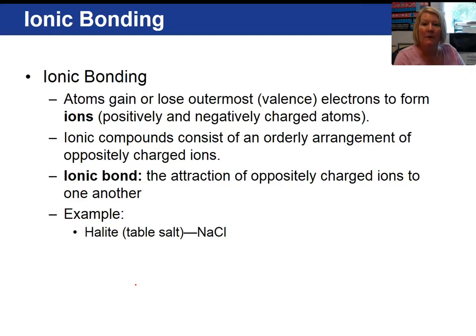The first type of bond is the ionic bond. In the ionic bond, there is a transfer of electrons between atoms, which forms ions. An ion is simply a charged atom, either positive or negative. Let's take a look at an example of a mineral that has an ionic bond. And halite, which is rock salt, is what we will be looking at.